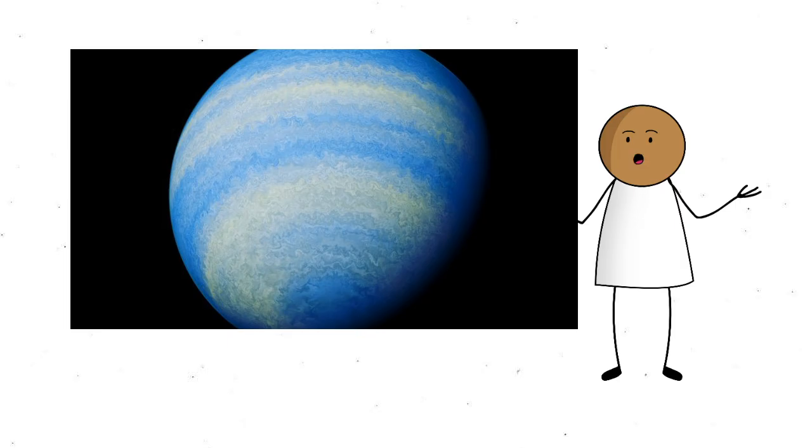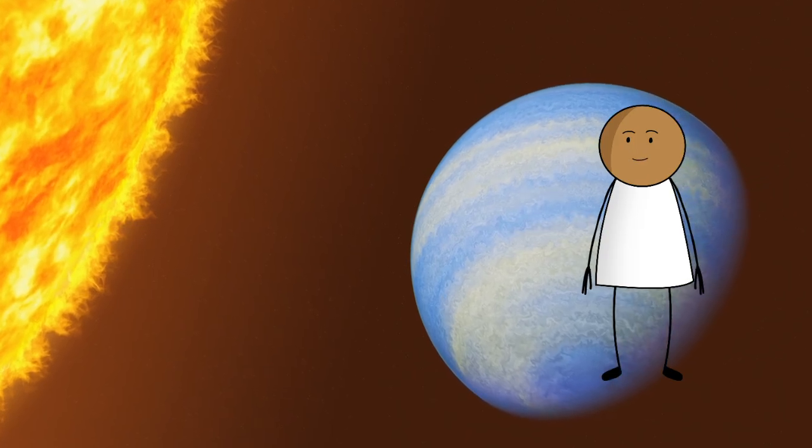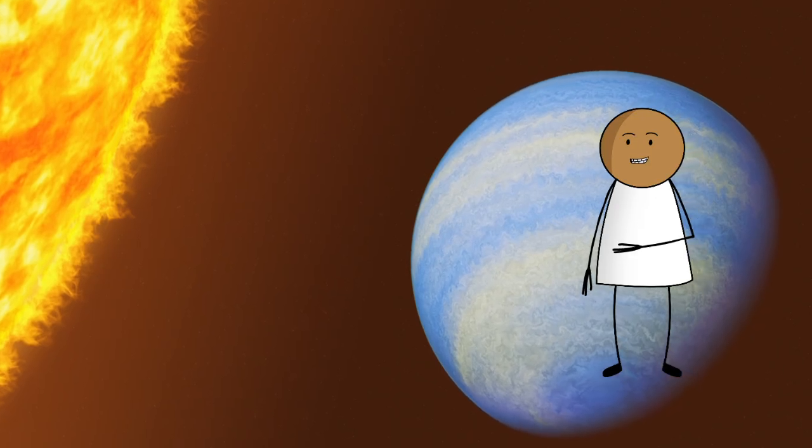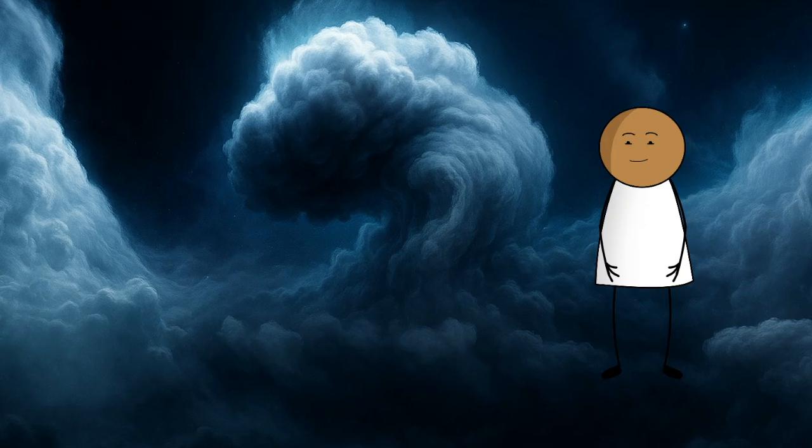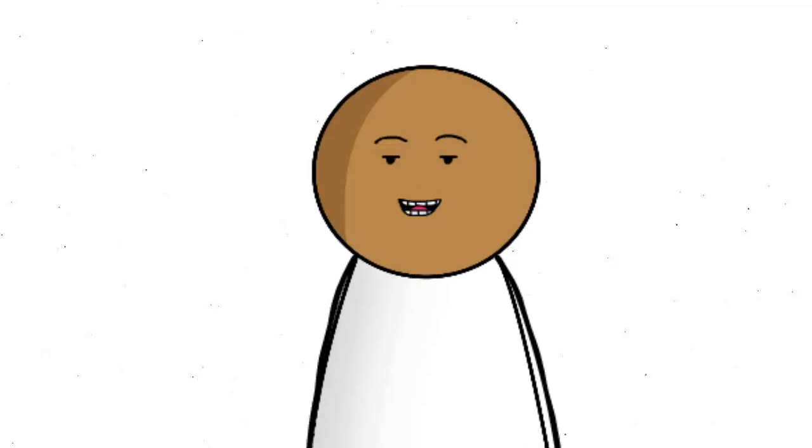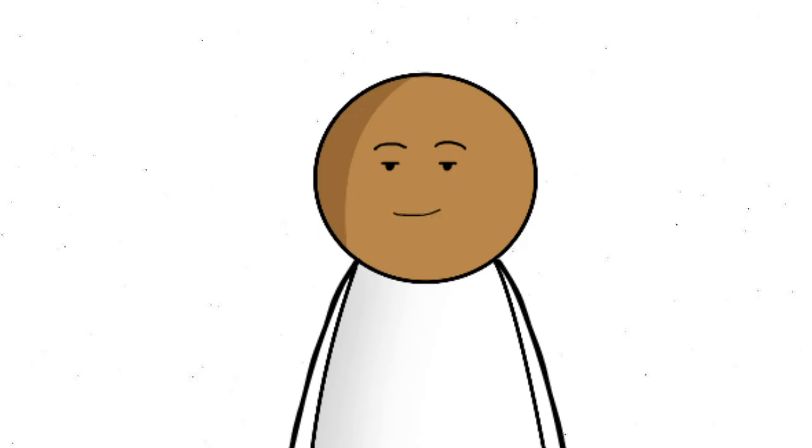Let's unpack that horror. First off, HD 189733 b is a hot Jupiter, a gas giant that orbits extremely close to its star. It's tidally locked, which means one side always faces the star and gets roasted nonstop, while the other side is stuck in eternal darkness. The temperature swings are so brutal that winds whip across the planet at speeds faster than a speeding bullet.